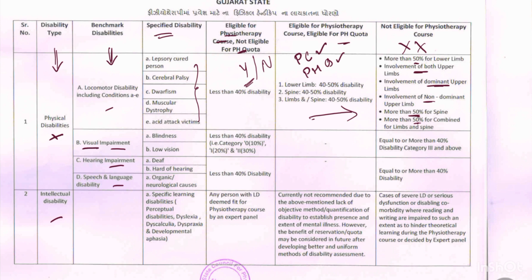Under visual impairment — blindness and low vision — persons eligible for the physiotherapy course are those with less than 40% disability: criteria one (10%), criteria two (20%), and criteria three (30%). Persons NOT eligible are those with equal to or more than 40% disability — category three or above.